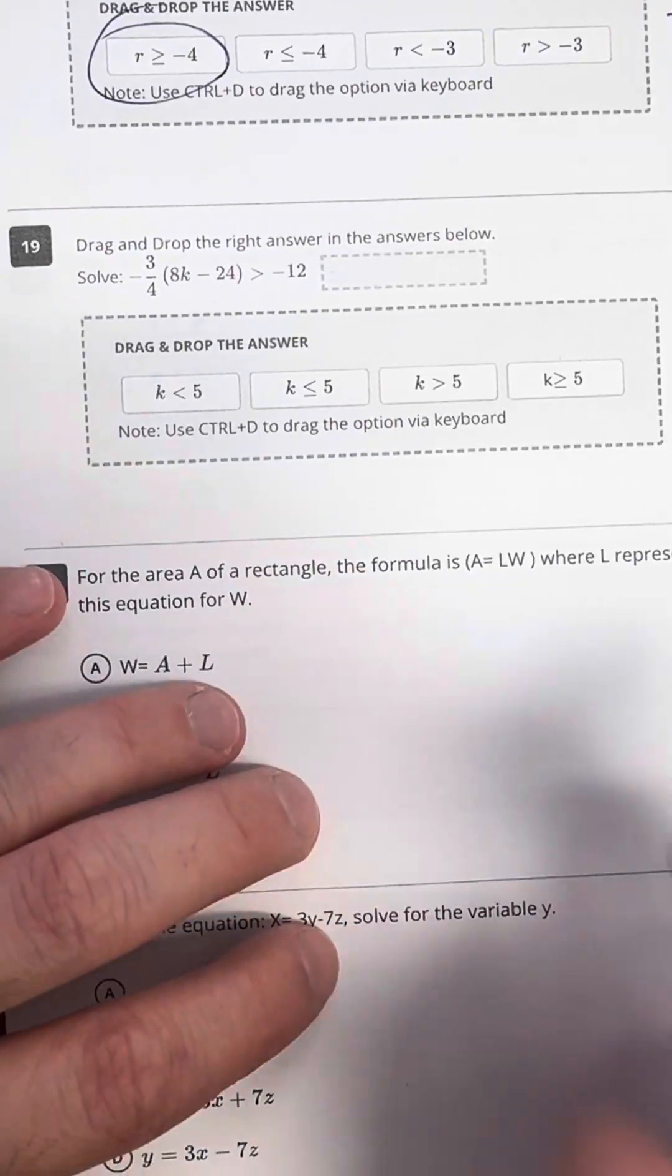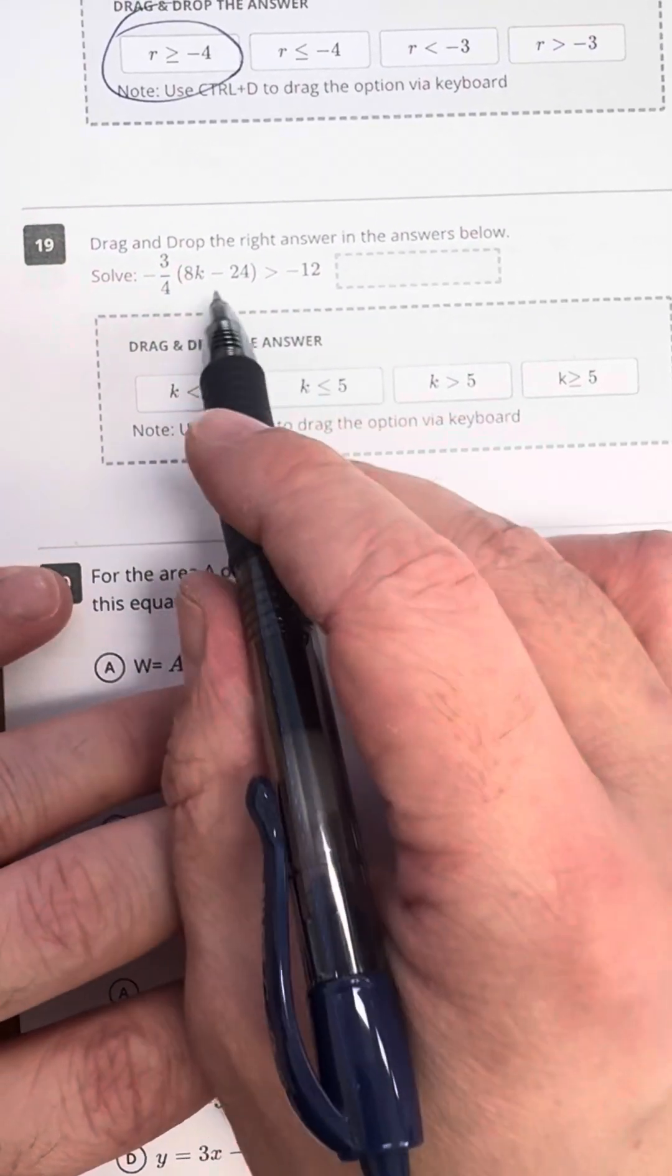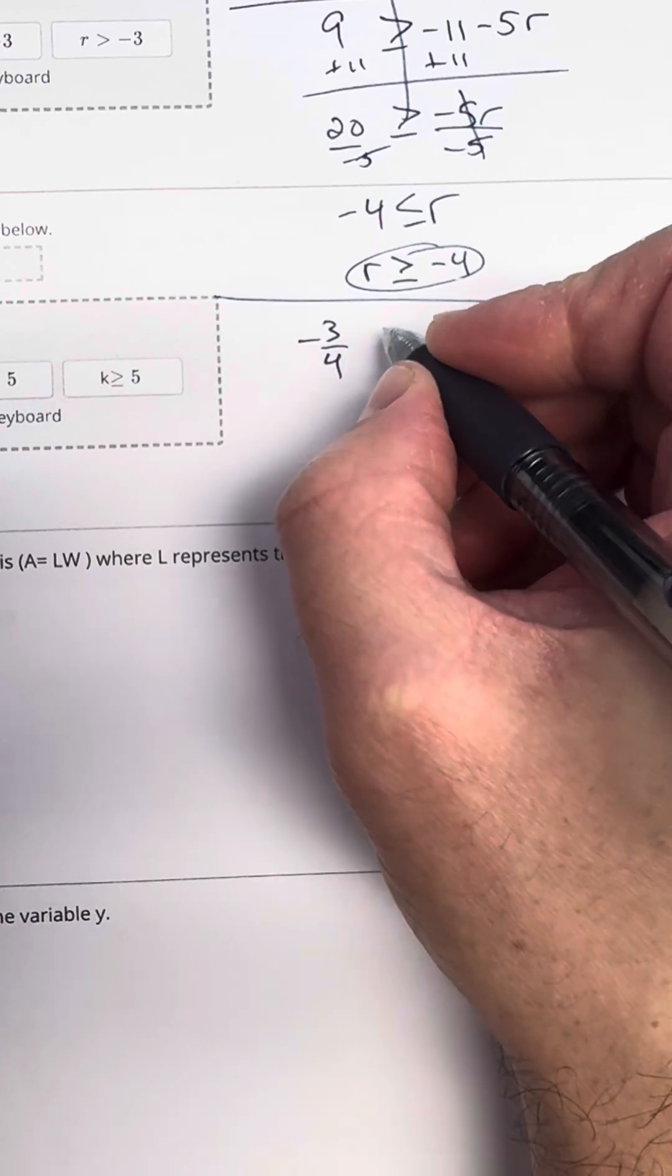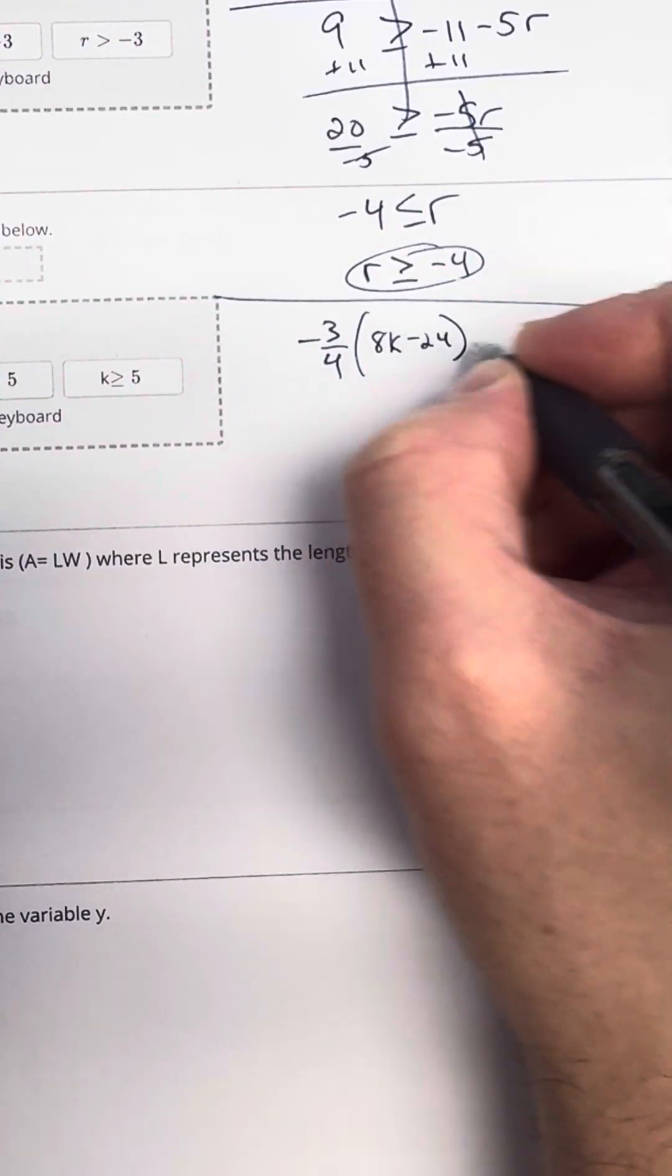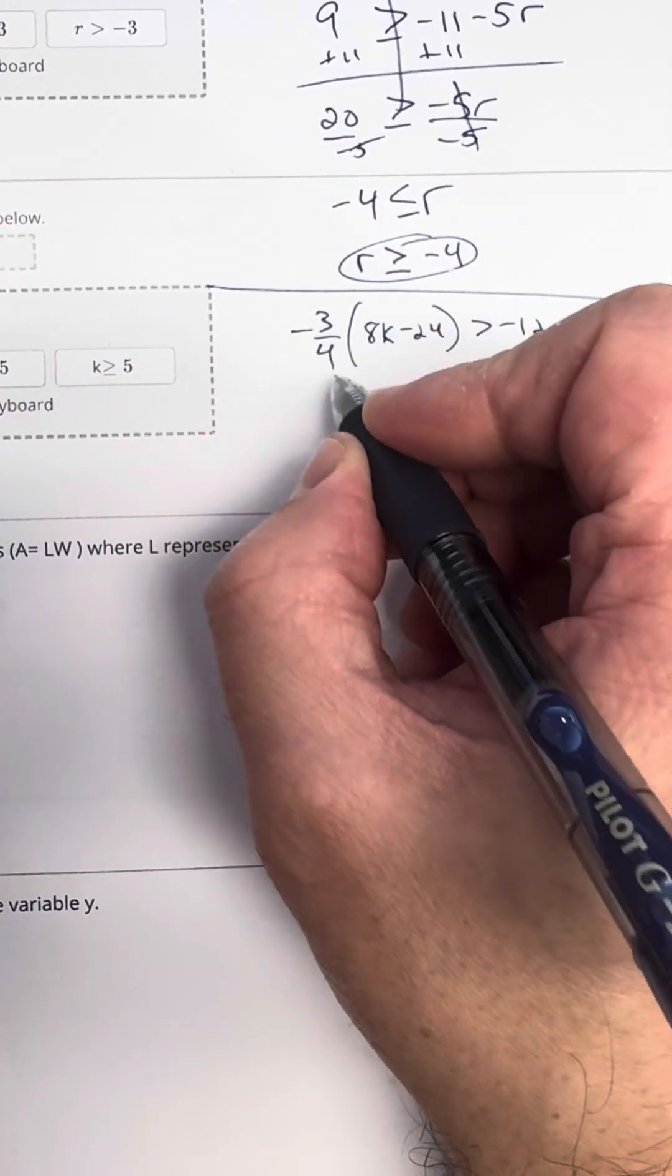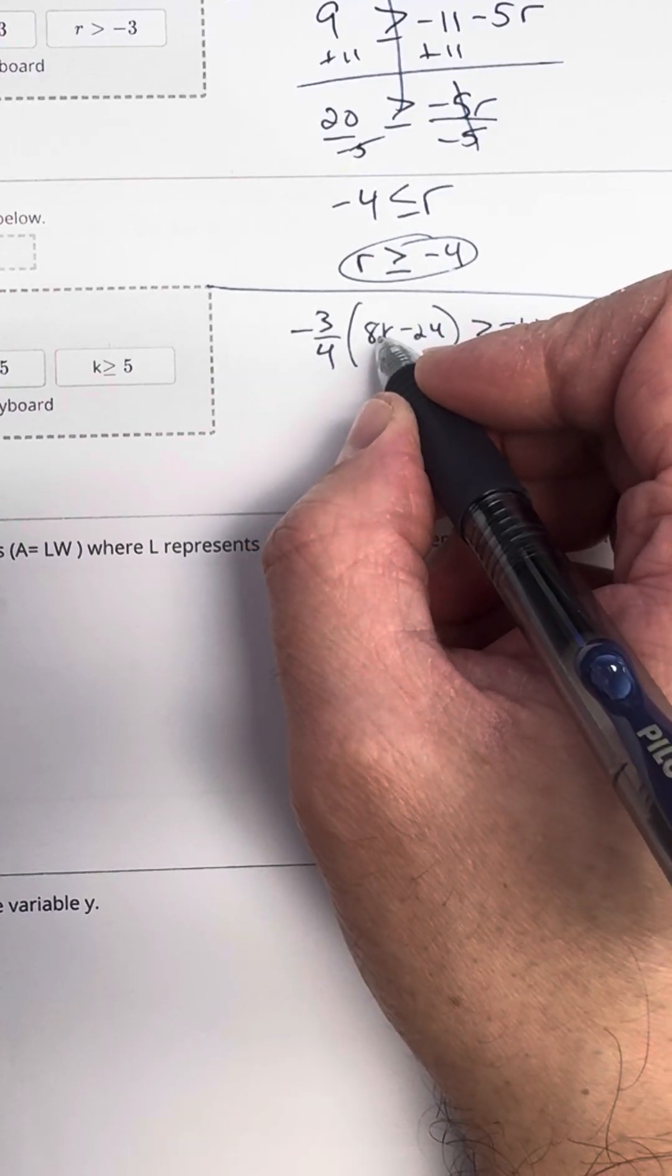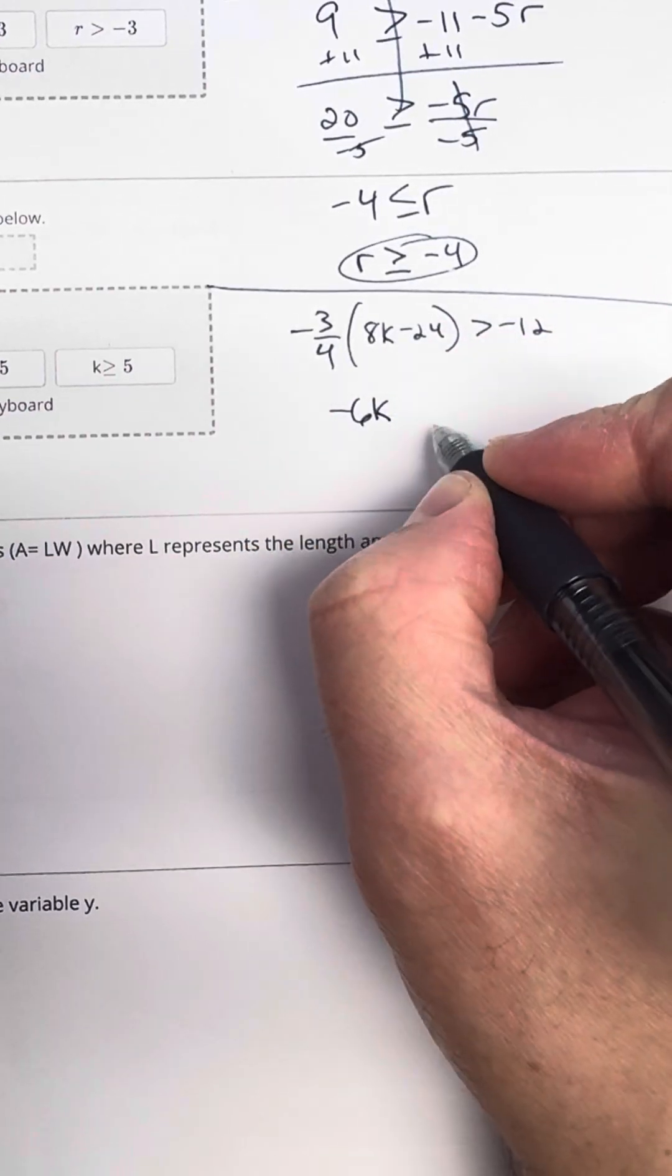Okay, number 19, drag and drop. We're not going to do that. We're just going to go ahead and solve. So I'll go ahead and write it over here. Negative 3 over 4 is going to distribute to the quantity of 8K minus 24, which is greater than negative 12. So we're going to distribute. Negative 3 over 4 times 8K. I could use the calculator for this, but in the interest of time, I'm going to go a little bit faster. Negative 3 times 8 is negative 24. Negative 24 divided by 4 is negative 6. This is going to end up being negative 6K.